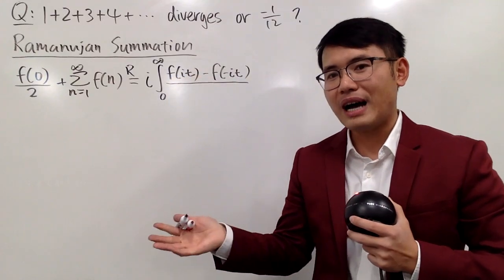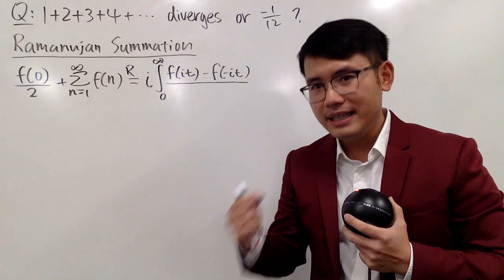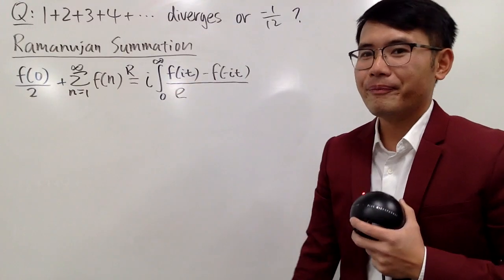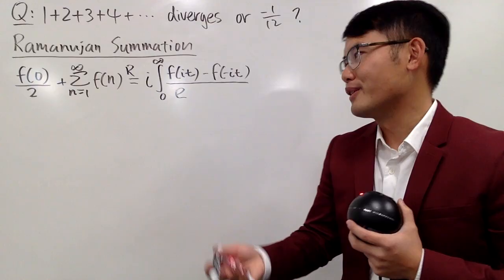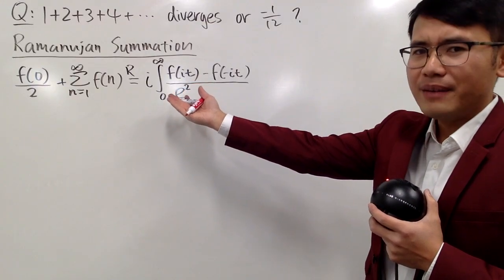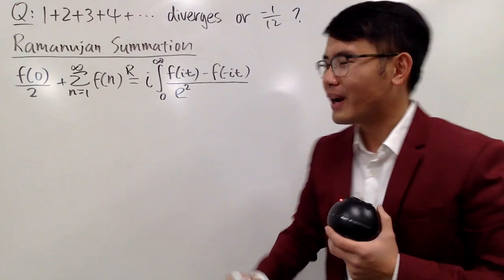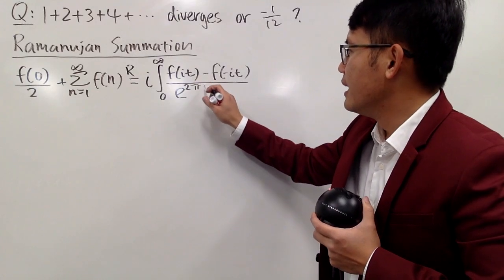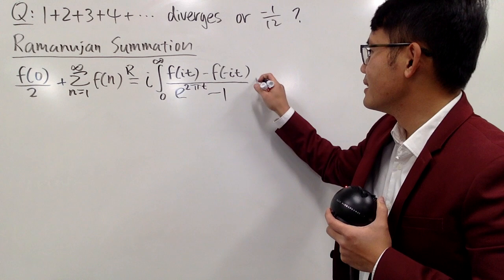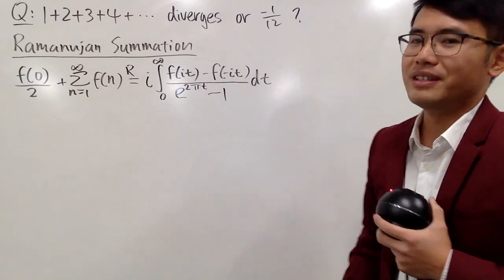We will have f of i t, and then minus f of negative i t, and then divide it by—if you have i, don't forget to invite e to come out to help us out. Here is the e. And we also have a regular number, 2. And of course, when you see e and then i, how can we not have the pi. And here is the pi, and then we have the t, and then we have the minus 1.